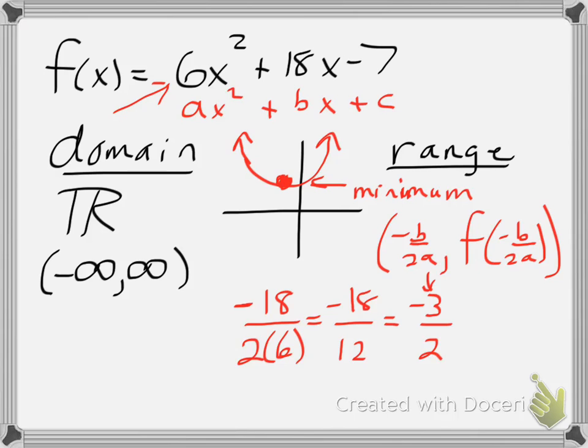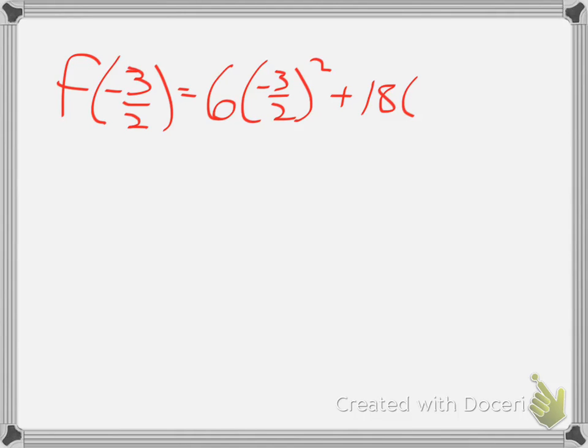I'll take that value and put it back into f of x. In other words, I want to find now what is f of negative 3 halves, which, following my function, means I'll say 6 times negative 3 halves squared, plus 18 times negative 3 halves, minus 7.